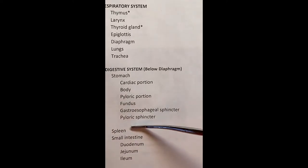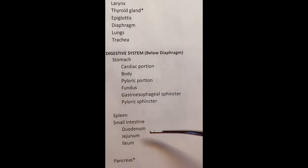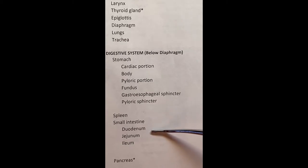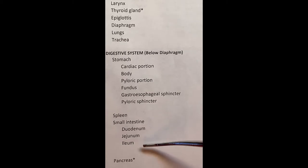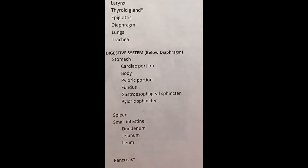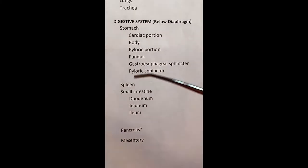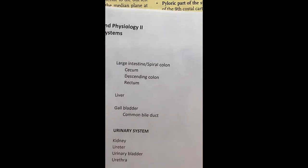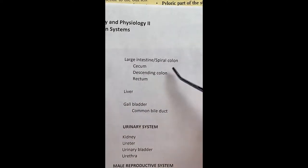We'll also see the spleen and the small intestine. The divisions of the small intestine are called the duodenum, the jejunum, and the ileum. We may see the pancreas depending on which pig we're looking at. I might draw it, and then we'll check out what mesentery is, and we'll also look at the large intestine.